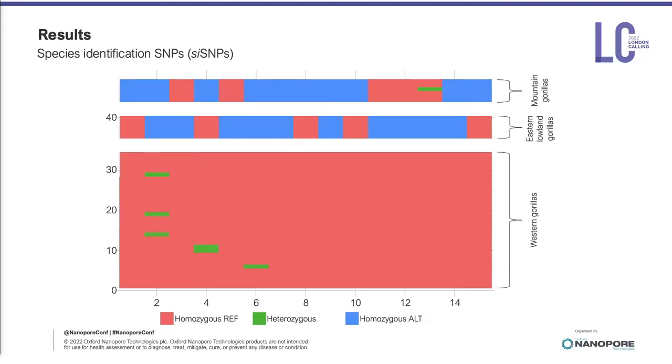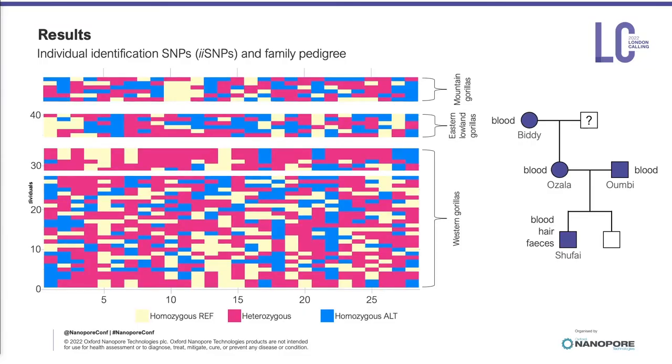On the y-axis we have different individuals, and on the x-axis we have different SNPs. For the species identification SNPs, we can clearly see three different patterns: western gorillas on the lower panel, and then eastern lowland and mountain gorillas — so our SNP set was effective for the identification of different subspecies. Similarly, for the individual identification SNPs, each row is different from the others, meaning these SNPs were also effective for individual identification. Not only that, we were also able to reconstruct a family pedigree from a group of samples received from Twycross Zoo, which is another really important piece of information for in-situ and ex-situ conservation and management of gorillas.